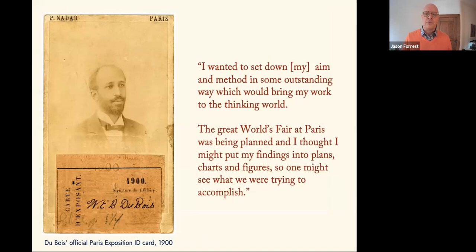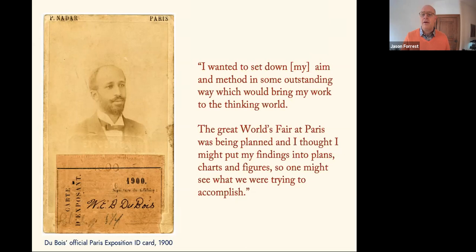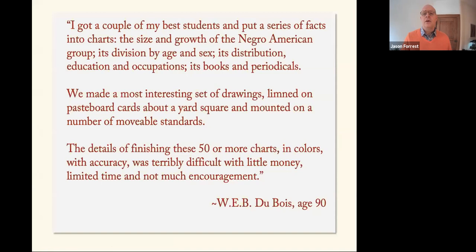Du Bois actually moved to Atlanta before The Philadelphia Negro was published, so when Calloway suggested Du Bois become curator for the 1900 exposition, Du Bois naturally proposed a study of the Georgia Negro. Du Bois was very ambitious — he wrote: 'I wanted to set down my aim and method in some outstanding way which would bring my work to the thinking world. The great world's fair at Paris was being planned and I thought I might put my findings into plans, charts, and figures so that one might see what we were trying to accomplish.'